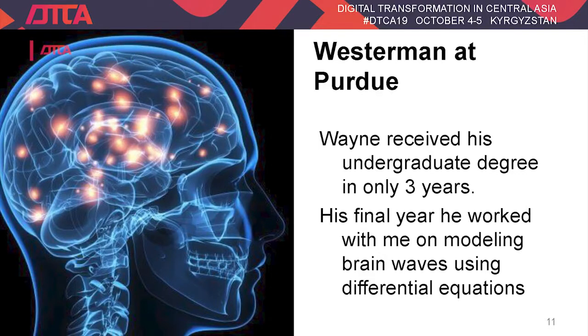Wayne did his undergraduate research for me working in the area of neurocomputing. He was trying to model the brainwaves in the human brain by using wave equations — trying to model the propagation of brainwaves using wave equations. So he had developed an interest in looking at neural networks. This was in the mid-1990s.